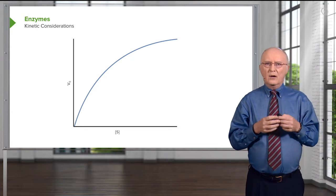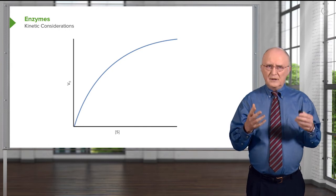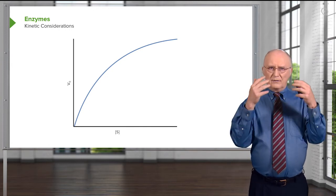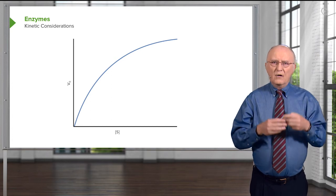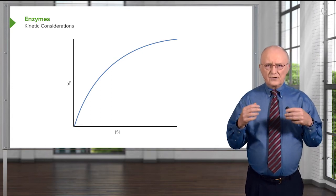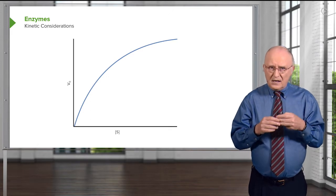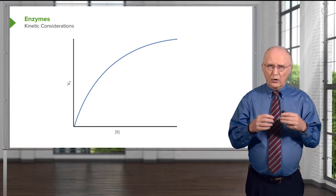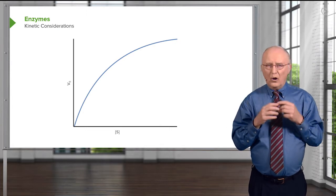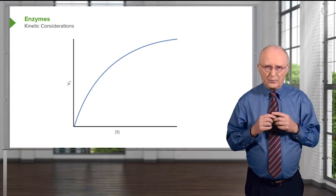First of all, we're plotting on this graph a reaction. The reaction is plotting the velocity of the reaction on the y-axis versus the substrate concentration that's used in the reaction on the x-axis. Now you notice the v has a little zero beneath it, and the zero beneath it I'll explain later, but it's called the initial velocity for our purposes.